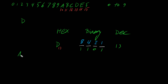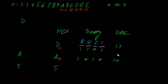Now let's say we have hexadecimal A and want to convert it to decimal. A corresponds to 10 in decimal. To get 10, we turn on 8 and 2. Now let's convert hexadecimal 5: 8 is off, 4 is on, 2 is off, and 1 is on, so 4 plus 1 equals 5. The decimal value is also 5. So here we converted only single-digit hexadecimal to decimal.